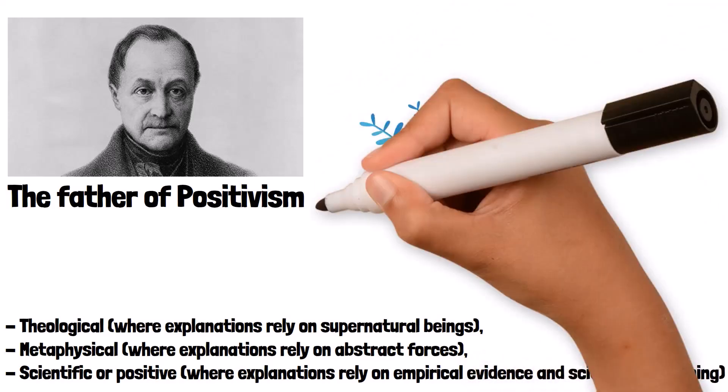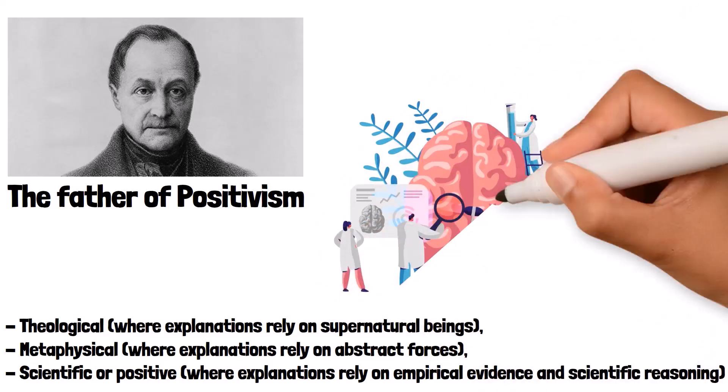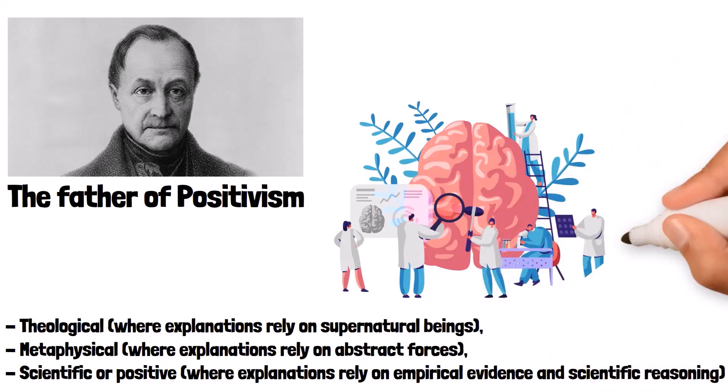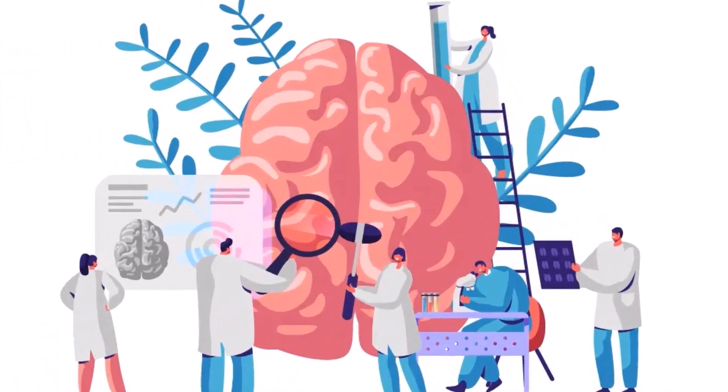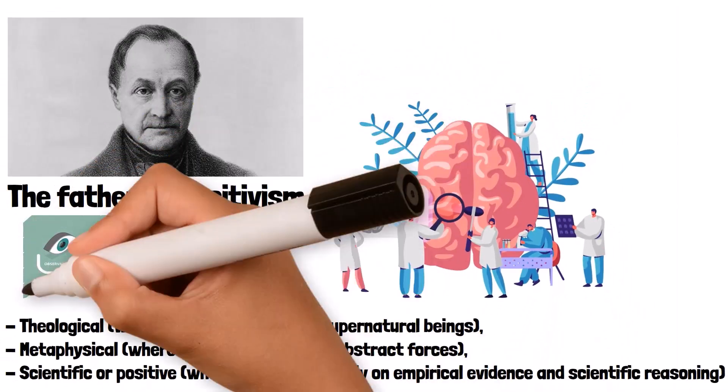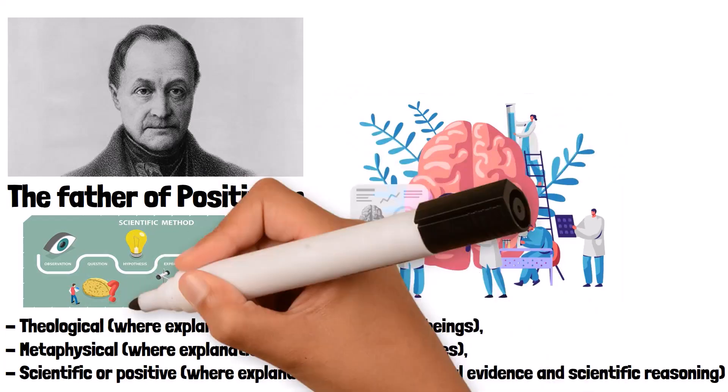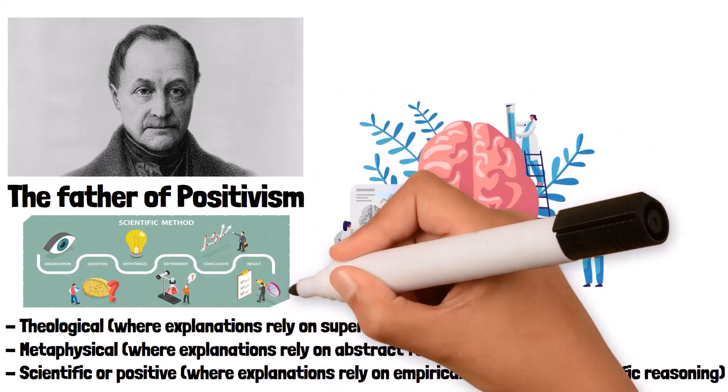For example, consider how positivism would approach the study of the natural world. Instead of relying on philosophical speculation or religious beliefs, positivists would advocate for conducting experiments, making observations, and formulating hypotheses based on empirical data. This methodological rigor is evident in fields like physics, chemistry, and biology, where scientific theories are tested through repeatable experiments and observations.